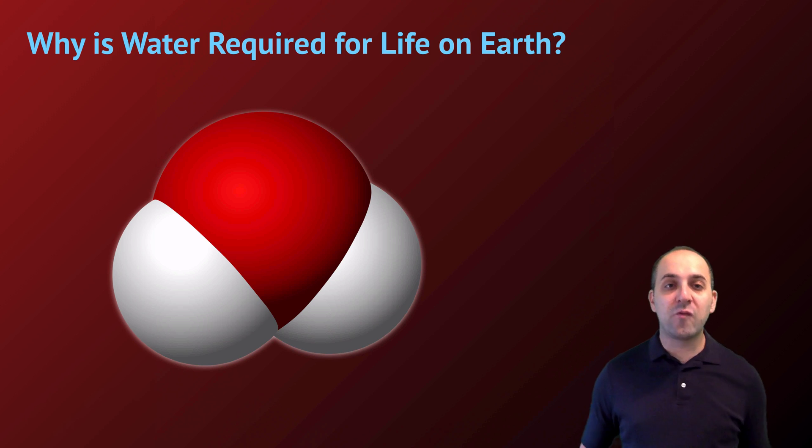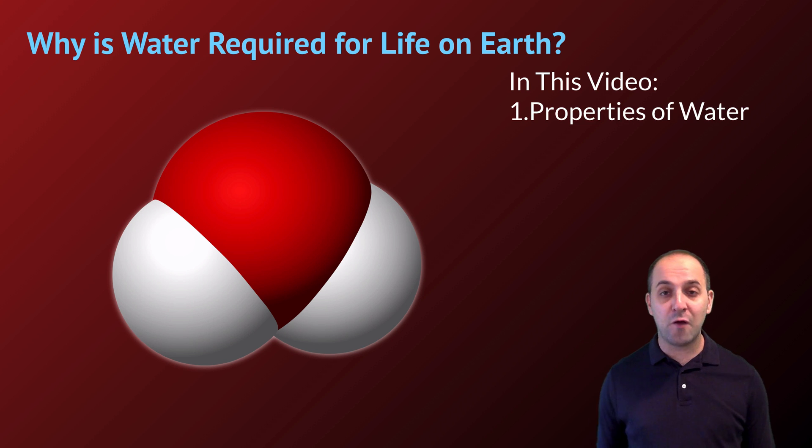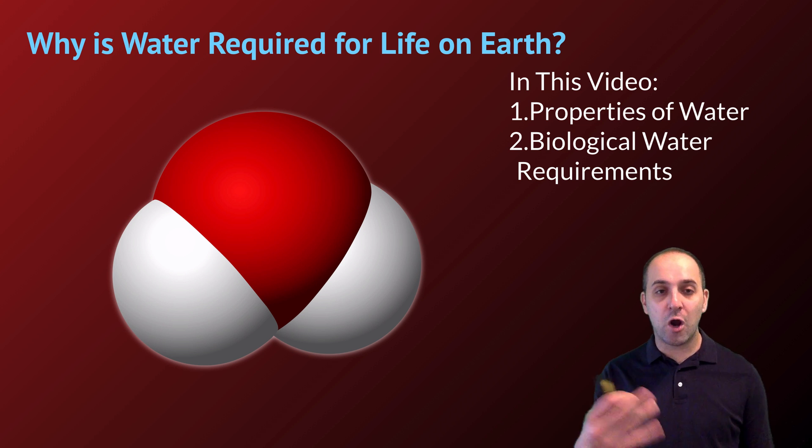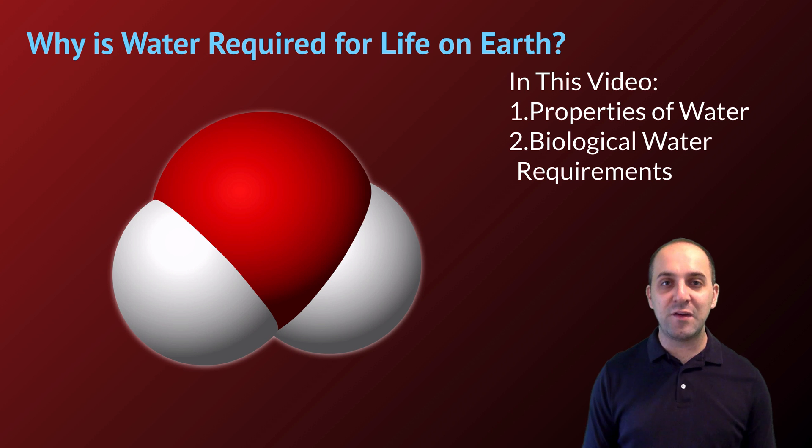The question we're trying to answer here is why is water required for life on Earth? In this video we're going to talk about the various properties of water, spotlight a couple of them that make life possible, and discuss why biological systems require water. To start, we'll use this representation of a water molecule. The big red atom in the middle is oxygen and the two white atoms on the sides are hydrogens.